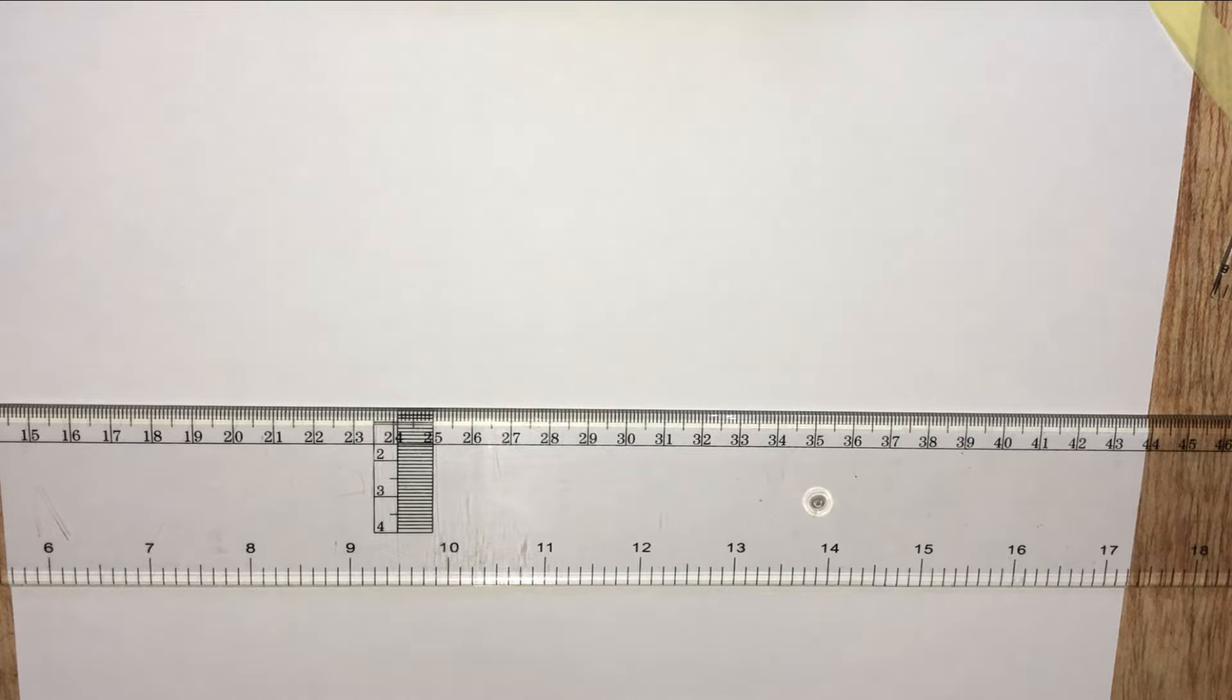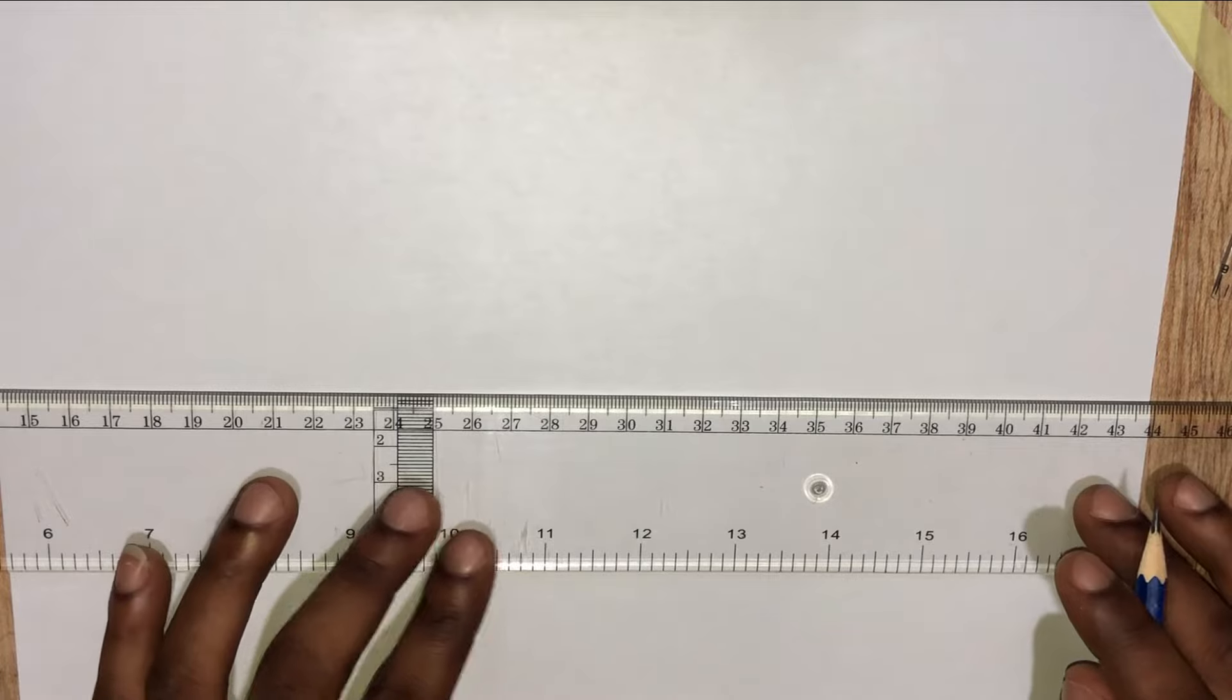In this video we'll be looking at how to draw an ellipse using the rhombus method. So we have been given the length of the rhombus to be seven centimeters. Let's draw a horizontal baseline.